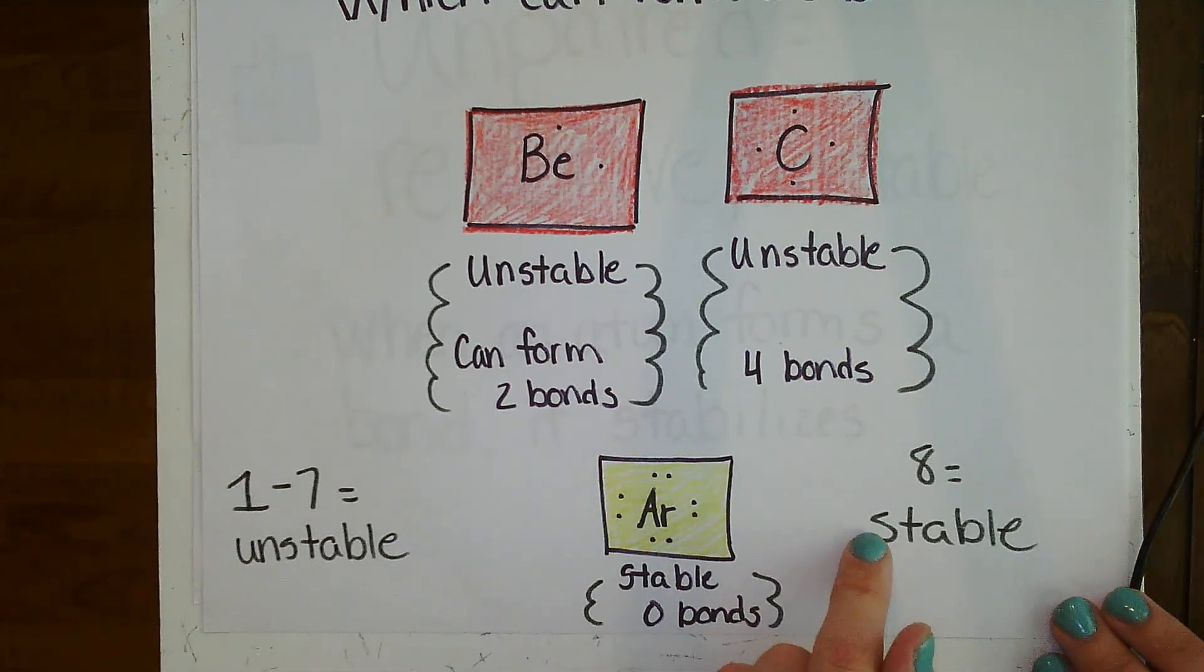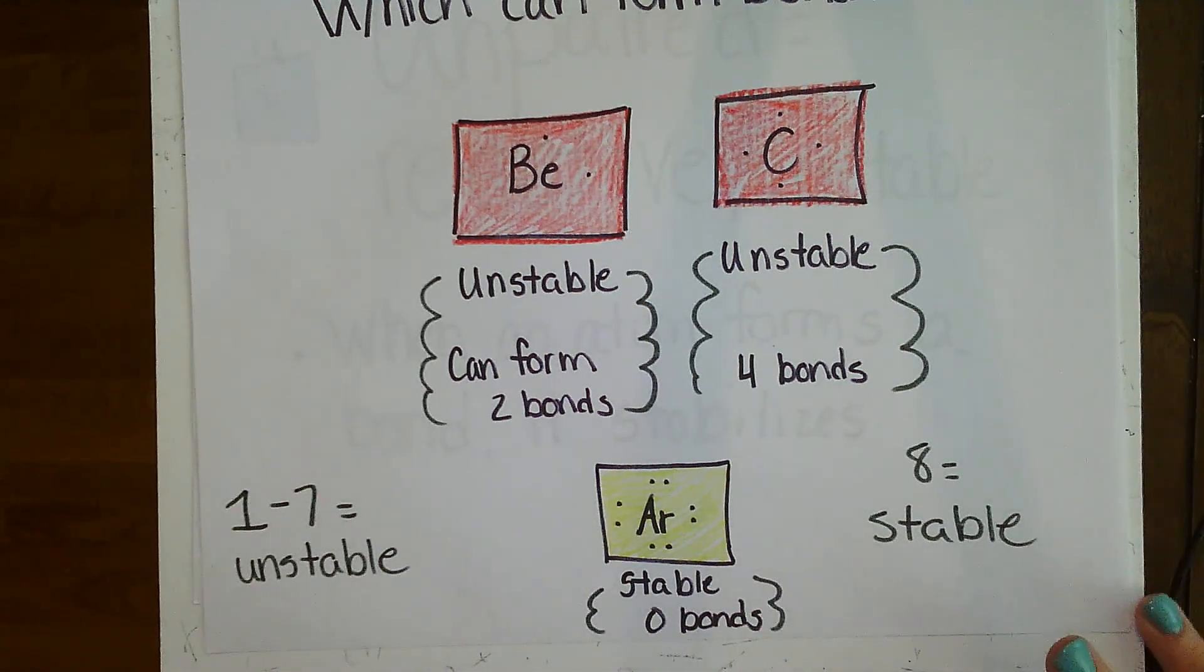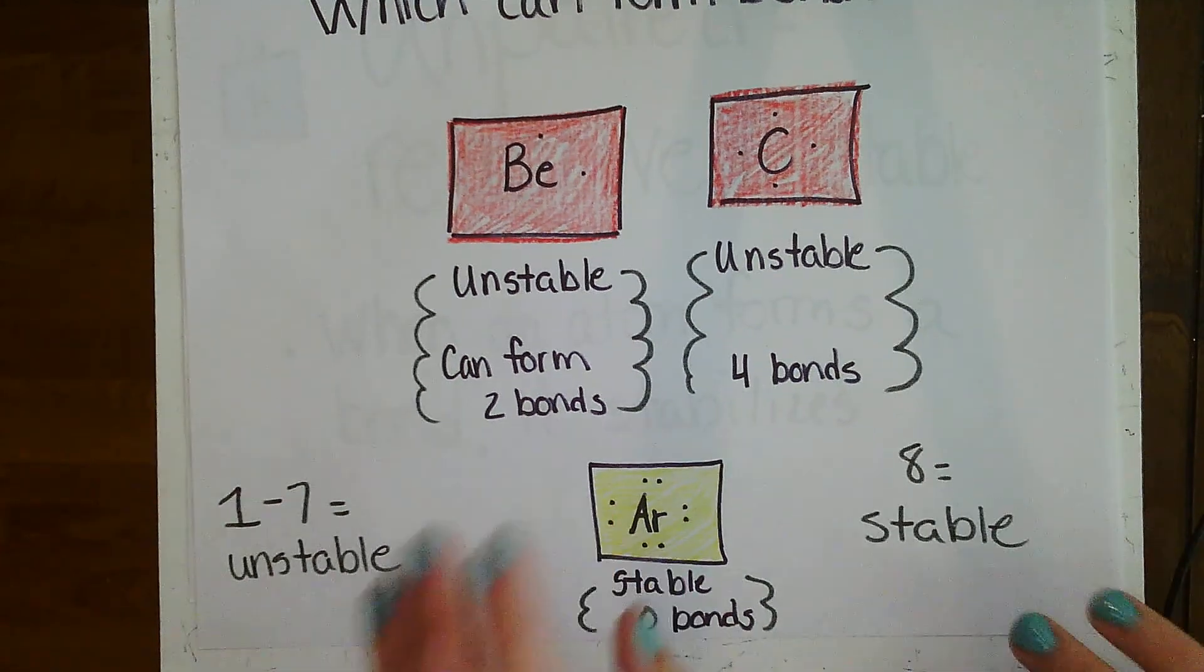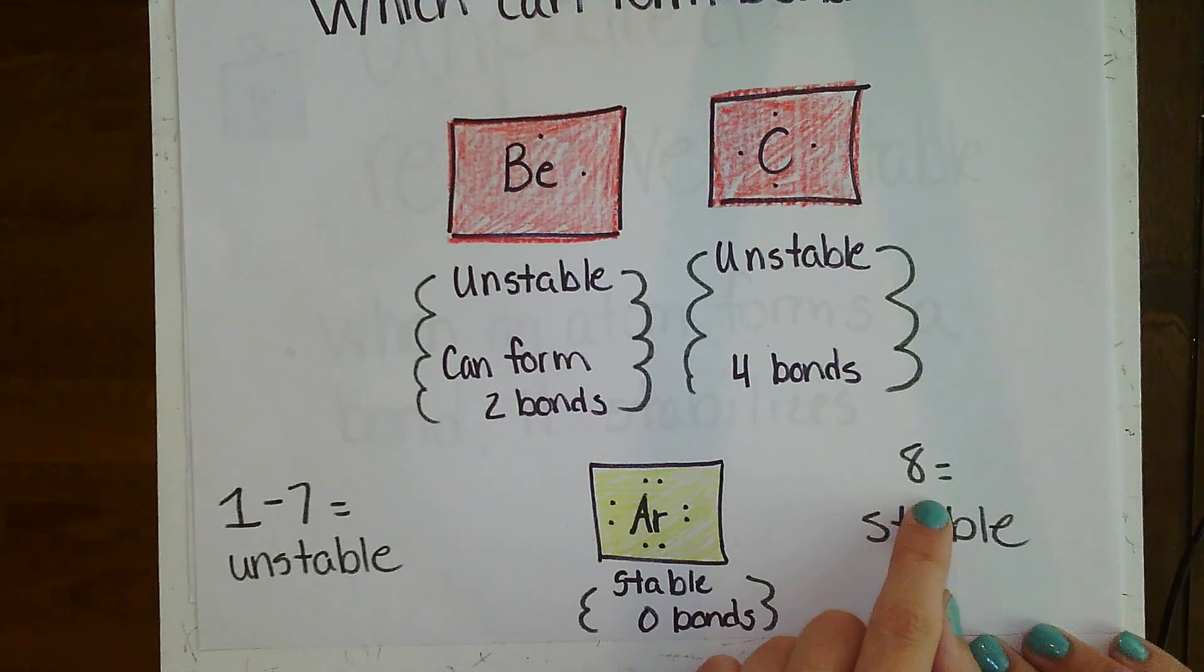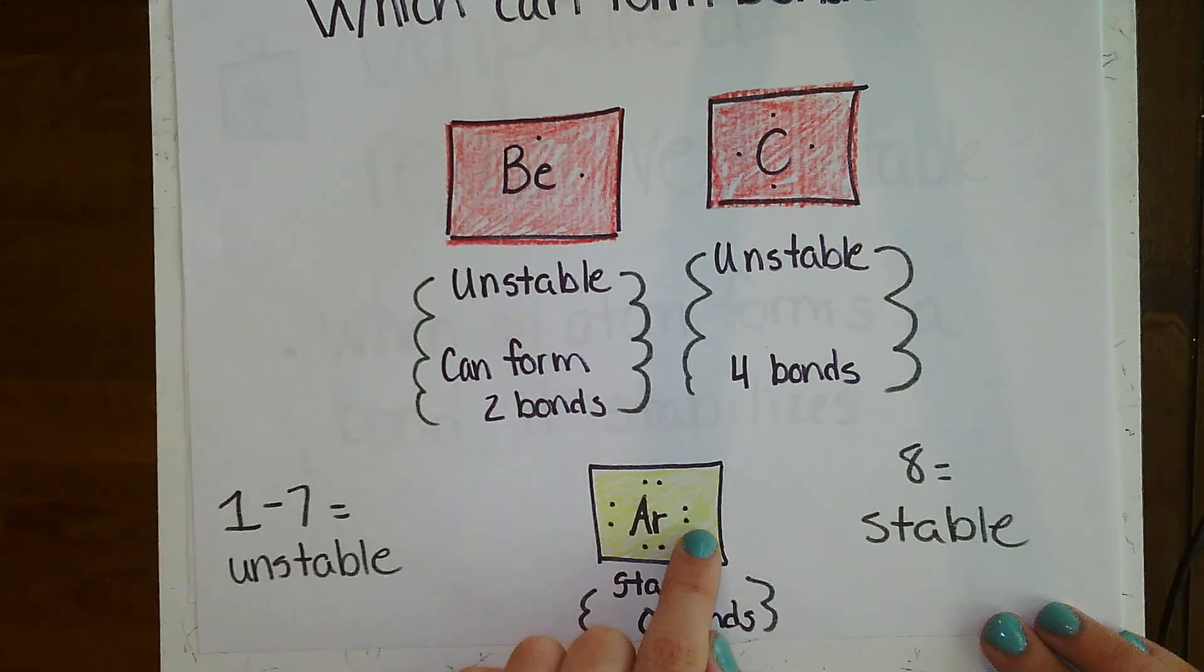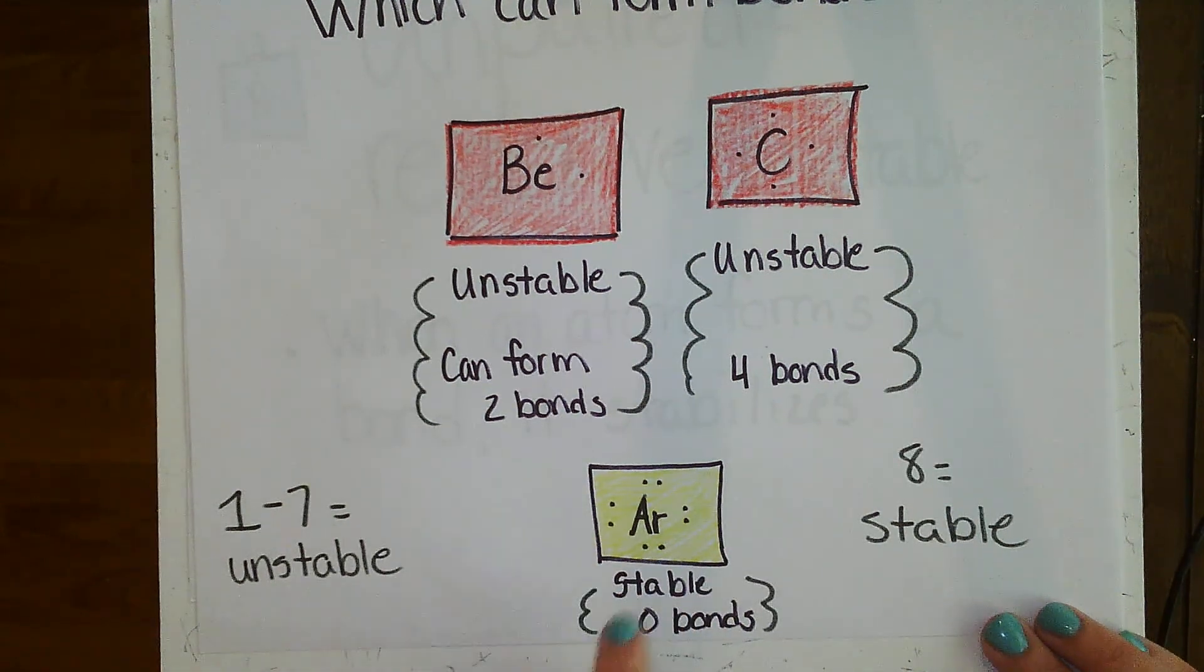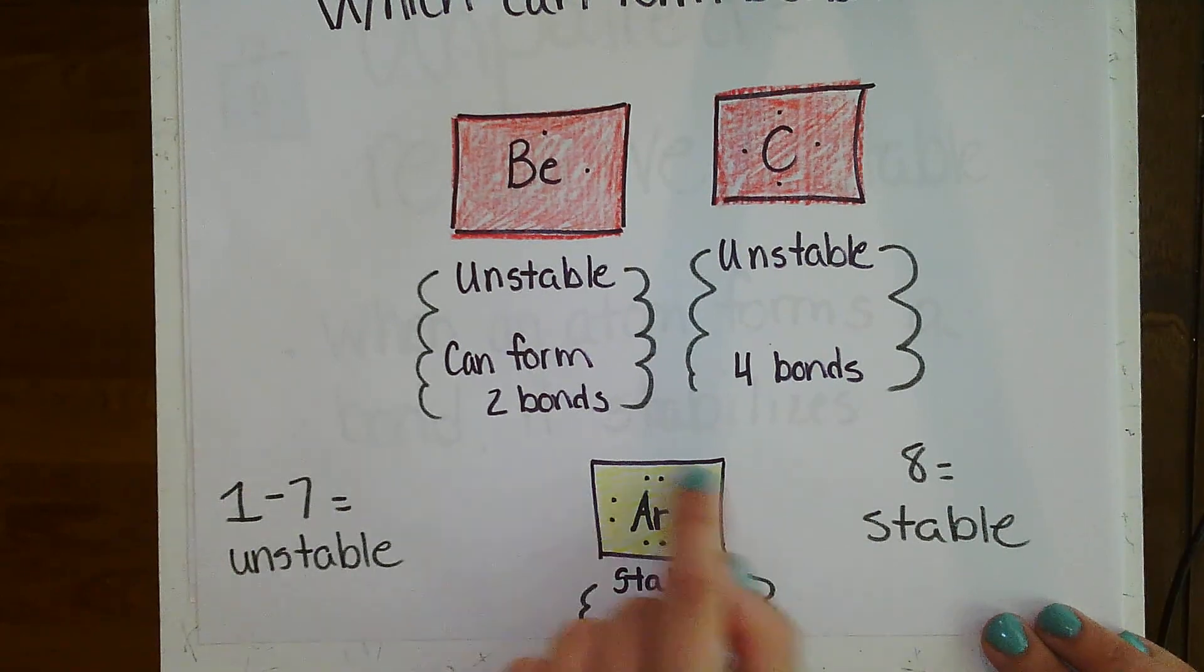Remember when we learned about the noble gases, group 18, and we talked about how they didn't really mix with other elements, and I made the joke, they're the noble gases and they don't want to mix with the commoners? Well, now we dive a little bit deeper into why that is. Group 18, we're going to take the ones digit place. That means they have 8 dots: 1, 2, 3, 4, 5, 6, 7, 8. Do we see any dots without a pair? Those 2 are paired, these 2 are paired, these 2 are paired, and these 2 are paired. That means this is a stable atom, and no bonds will likely be formed because they're already all paired up.